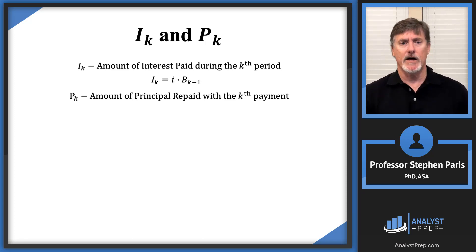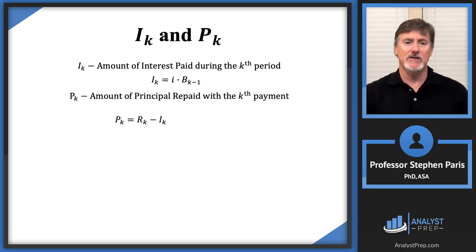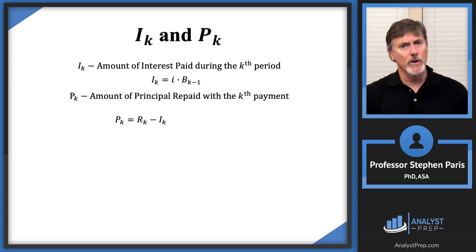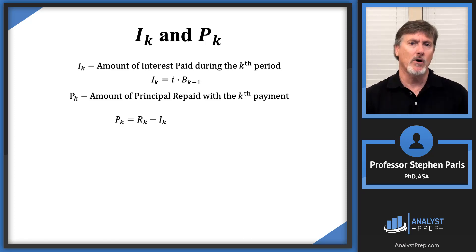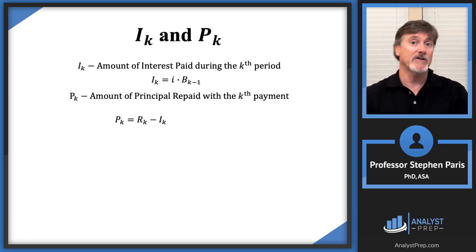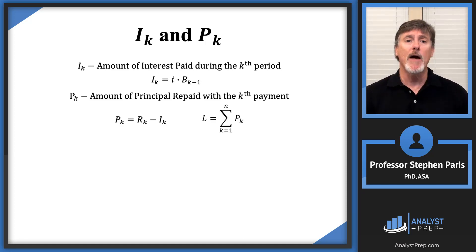Now cap P sub K is the amount of principal repaid with the Kth payment. The principal and interest components add together to give the total payment: cap R sub K equals cap P sub K plus cap I sub K. So cap P sub K equals cap R sub K minus cap I sub K. Also, if you add up all the P values — cap P one plus cap P two, all the way up to cap P N — you've accounted for all that you borrowed. In other words, the loan amount equals the sum of all cap P sub K values as K goes from one to N.